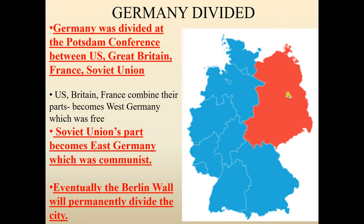A lot of people are going to leave East Berlin and go to West Berlin, which is eventually going to lead to the Berlin Wall being created. The Berlin Wall didn't divide Germany — the Berlin Wall just divided the city of Berlin between East and West. We're going to talk about the construction of the Berlin Wall in the next units to come, because it did not happen until the 1960s. We're really going to focus on the 40s and 50s in this unit.